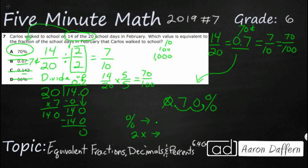56 is not correct. And so we are going to go with A, 70%.